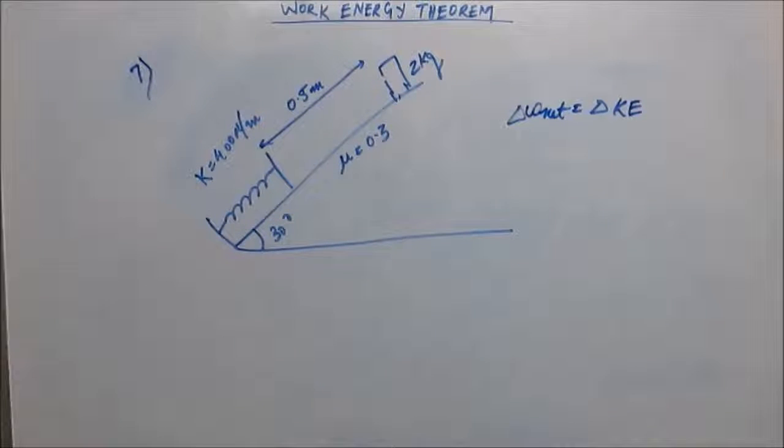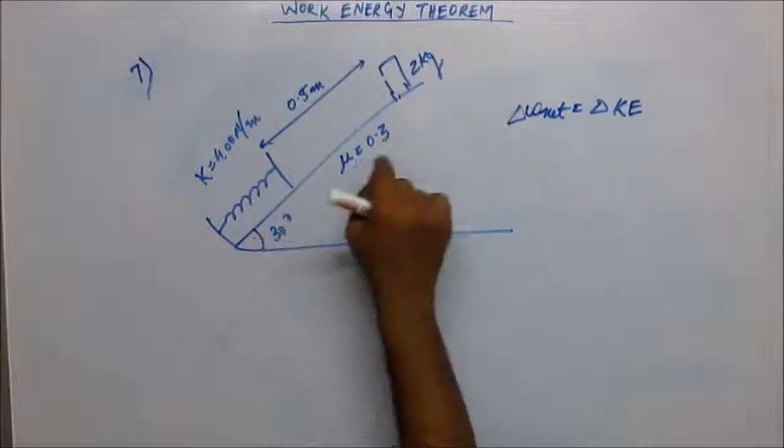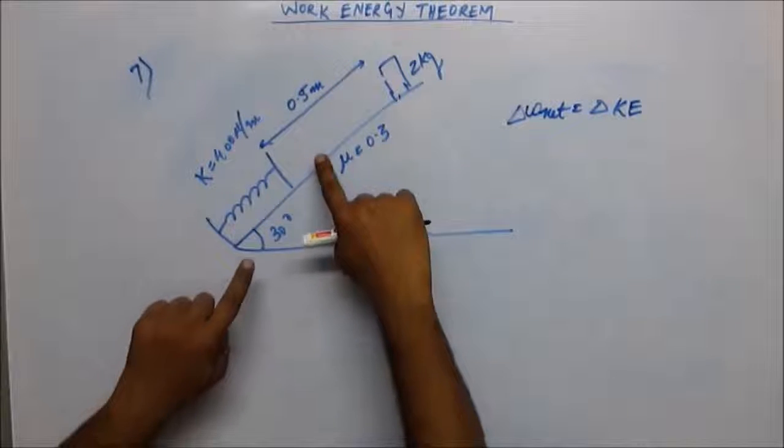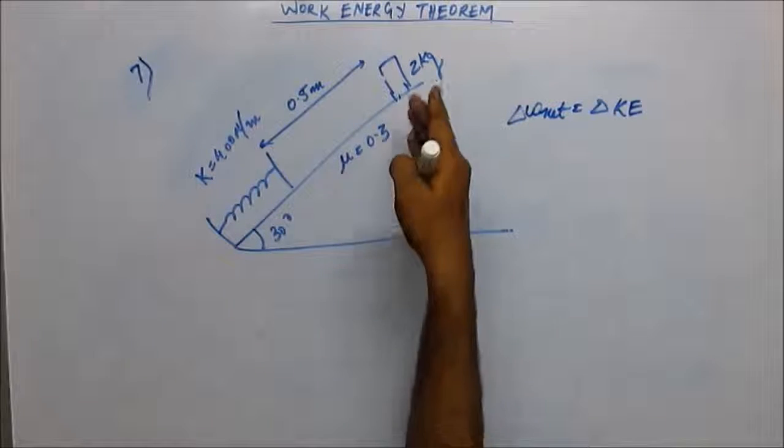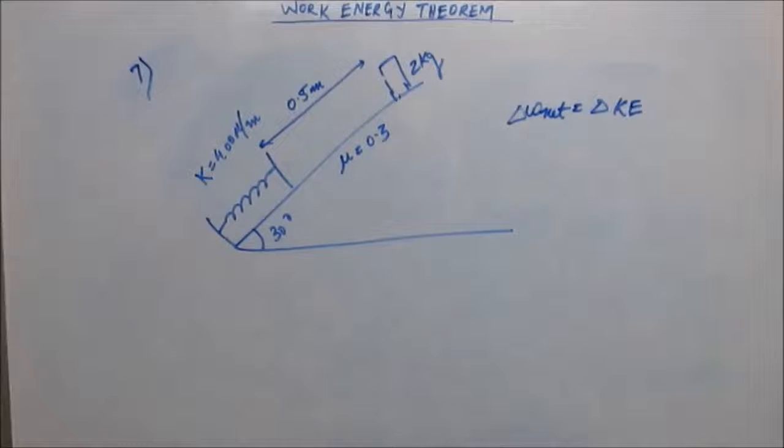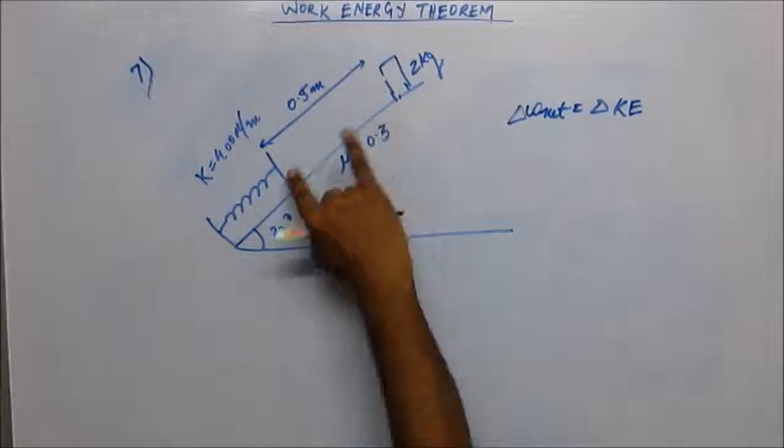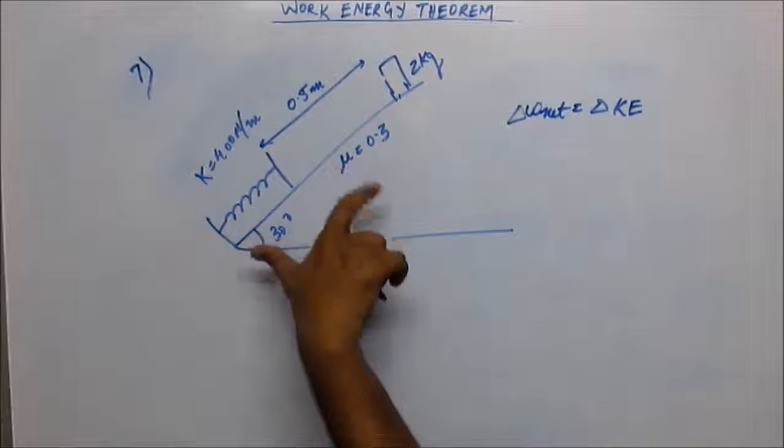Work done by gravity - let the compression be x. So this distance is 0.5 plus x. The vertical component which the body will come down, that will be (0.5 + x) sin theta of that.